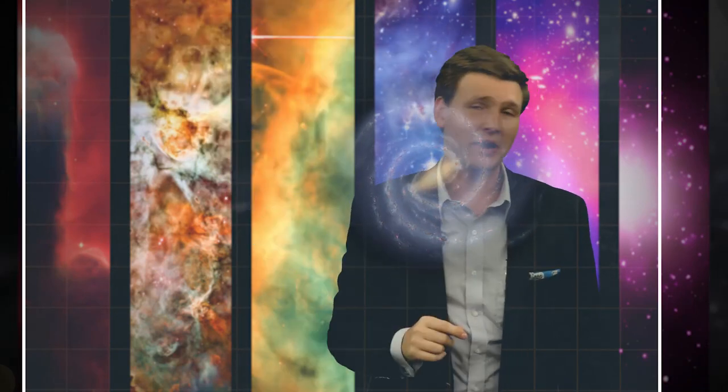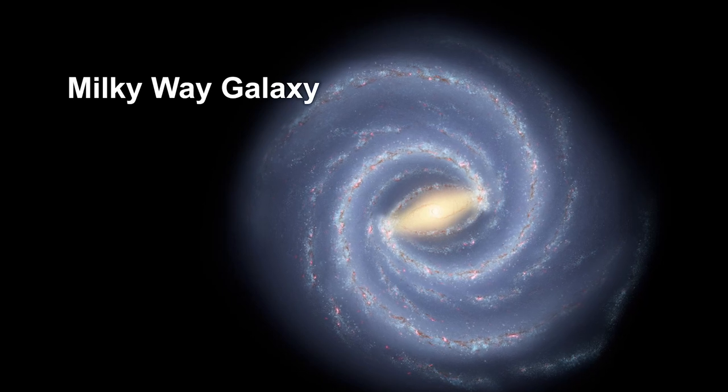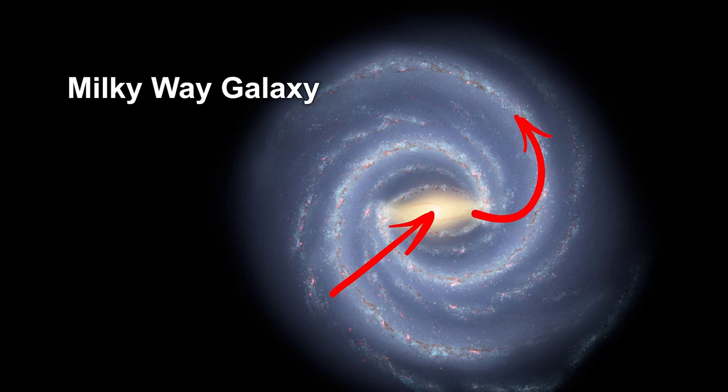One type of galaxy, the kind that we're going to look at today, is called a spiral galaxy. Our own Milky Way is a spiral galaxy. These galaxies have a dense cluster of stars in the middle and arms that spiral away from the center.